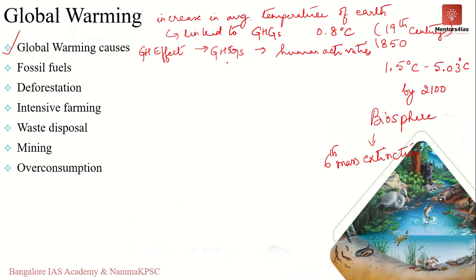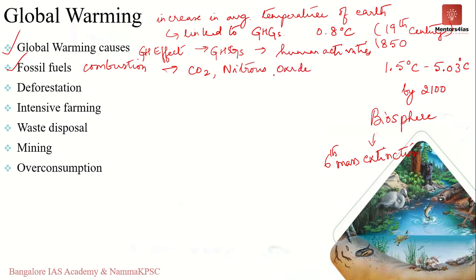The first cause is fossil fuels. The combustion of fossil fuels is a major cause of global warming as it produces carbon dioxide and nitrous oxide — greenhouse gases that trap the sun's heat and prevent it from escaping into space.